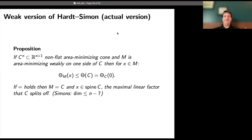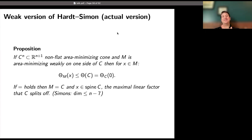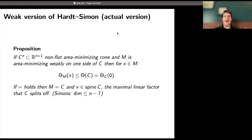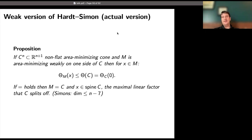In reality what I really want is: if you're area-minimizing weakly on one side of the cone, then for any point the density is at most that of the cone, with equality if and only if you're equal to the cone at that point — in the spine. This gives a dimension-reduction type condition: the points of maximal density precisely lie in the spine. This is exactly the same type of condition we need for the generic regularity argument.